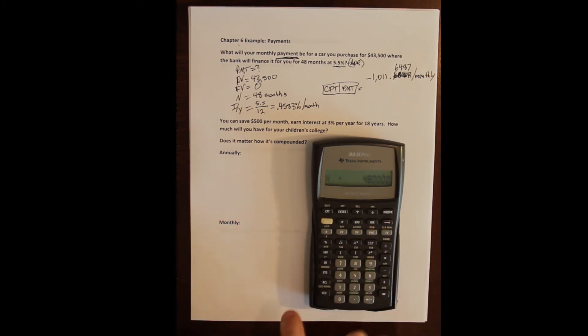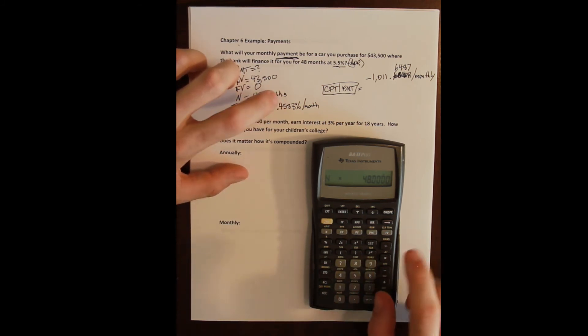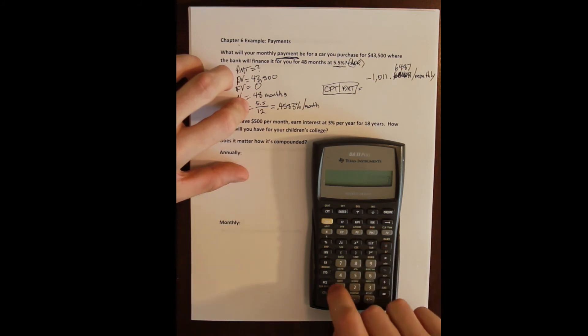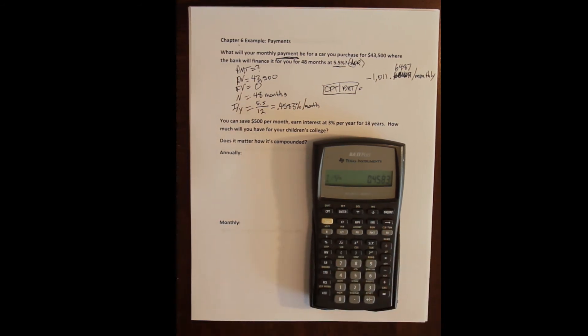Instead of doing this calculation separately and then entering point four five eight three, if I do five point five divided by twelve equals and then I just set the answer, without doing anything else, I set the answer to be IY.